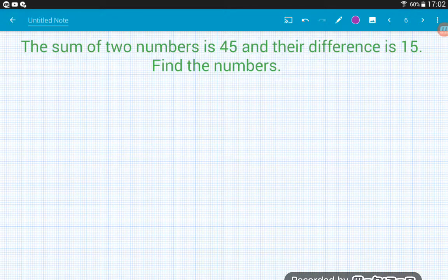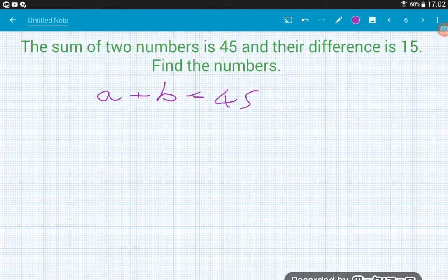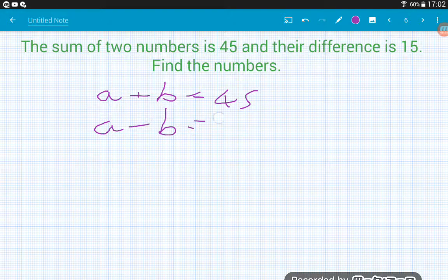The sum of two numbers is 45 and the difference is 15. Find the numbers. So here we've only got one sentence, but this one sentence tells us two things. So again, I'm going to call my numbers A and B. So the sum, whenever you're talking about a sum, we're talking about adding. So the sum of my numbers A plus B is equal to 45. And the difference is talking about subtraction. So we can say A minus B equals 15. Now we've got a choice here.